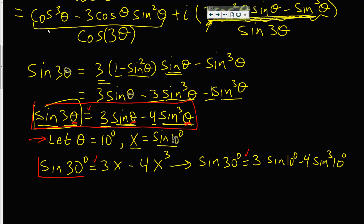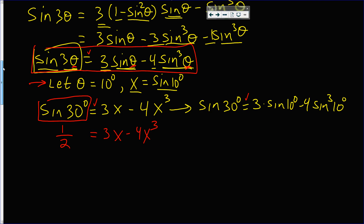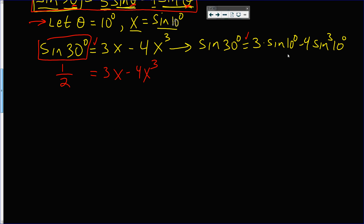Like I said at the beginning, sine of 30 degrees is a half. So a solution to the equation we're writing down is sine of 10 degrees, and I'm going to show that this equation has no rational roots. I hate a half, so I'm going to multiply both sides by 2. So I get 1 equals 6x minus 8x³. Since the leading coefficient is negative, I bring everything to the left side, giving 8x³ minus 6x plus 1 equals zero.